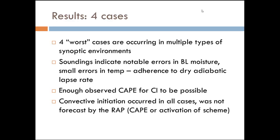In all of those cases, there was enough observed CAPE for convective initiation to be possible, and it did occur in all of those cases. But the way the RAP was handling it, we may not have anticipated it. Also, it wasn't just that low CAPE — the RAP also never activated its convective parameterization; it just didn't happen at all. So again, that may lead forecasters to think there may not be convective initiation later in the day.